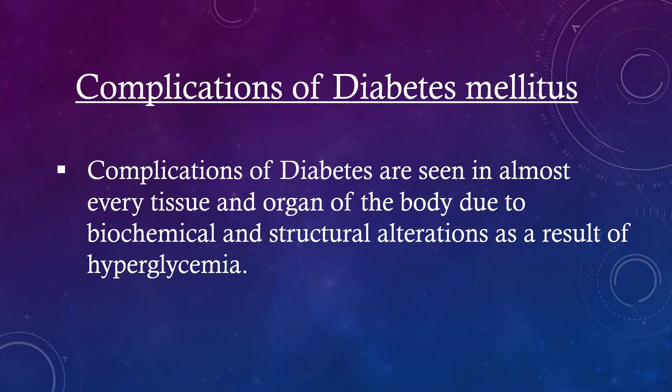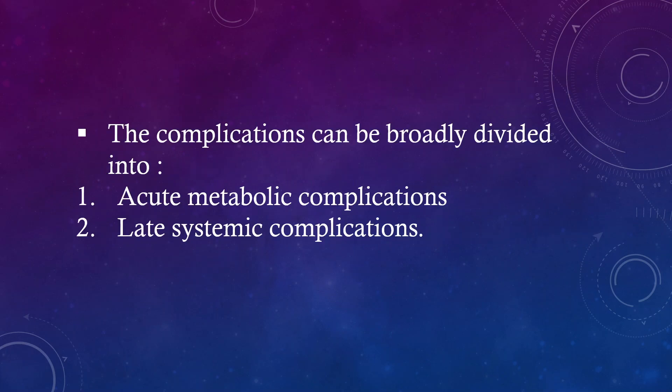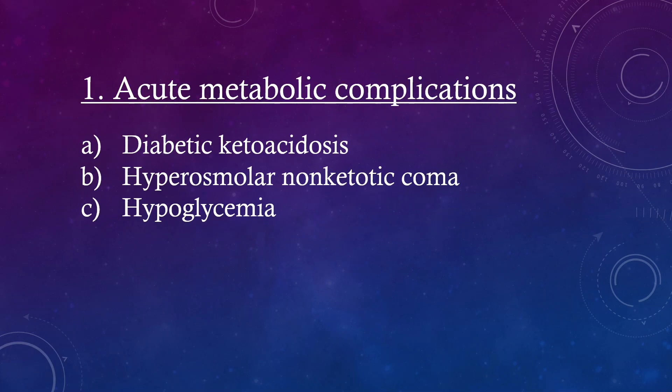Complications of diabetes are seen in almost every tissue and organ of the body due to biochemical and structural alterations as a result of hyperglycemia. The complications can be broadly divided into acute metabolic complications and late systemic complications. Acute metabolic complications include diabetic ketoacidosis, hyperosmolar non-ketotic coma, and hypoglycemia.